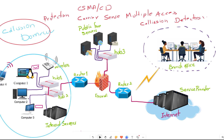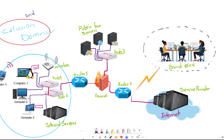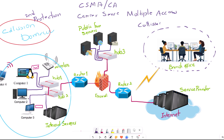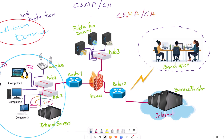CSMA/CD didn't fully solve the network collision problem — we need to avoid collisions before they happen. So a second technology was introduced: CSMA/CA, or Carrier Sense Multiple Access with Collision Avoidance. Using this technology, every connected device on the network sends a tiny piece of message to check if the network is free before the PC starts sending or transferring data.